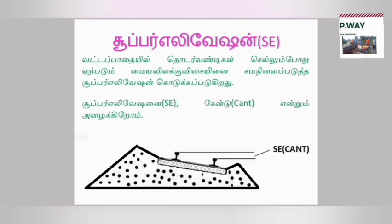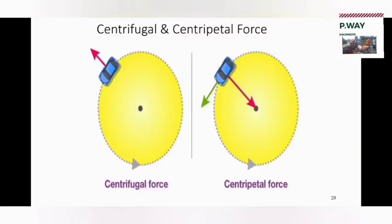Next we should know about super elevation in track. Super elevation means that to counteract the centrifugal force on a curved track, the outer rail is raised with respect to the inner rail.